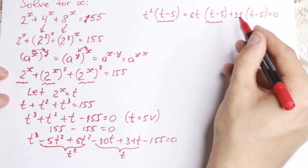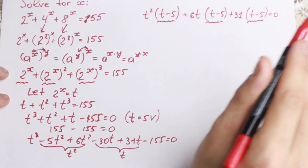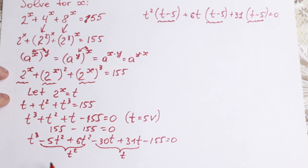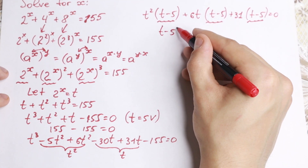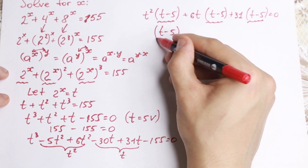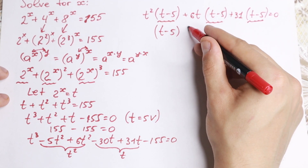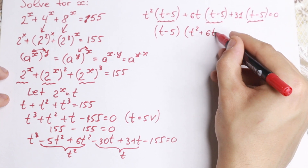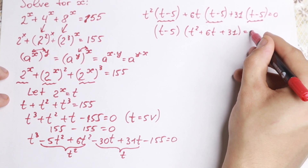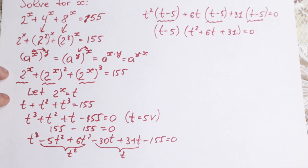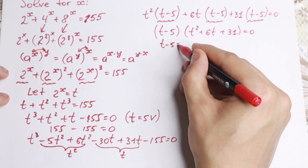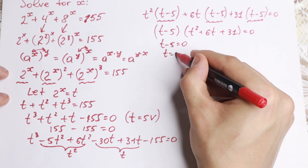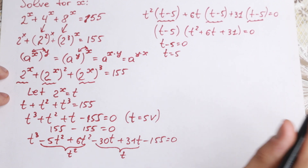This is my approach — there are many methods to solve a cubic equation. Factoring out (t minus 5), we get (t minus 5) times (t squared plus 6t plus 31) equals zero. Setting the first factor to zero gives t minus 5 equals 0, so t equals 5. This is our real solution.